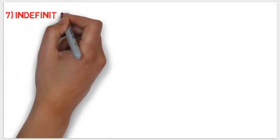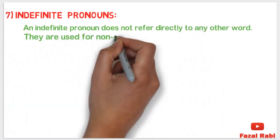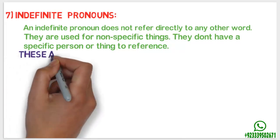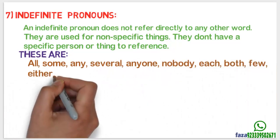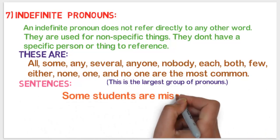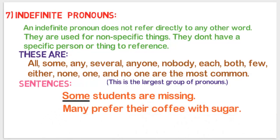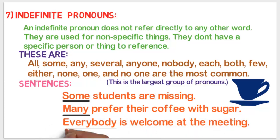Number seven: indefinite pronouns. An indefinite pronoun does not refer directly to any other word. They are used for non-specific things and do not have a specific person or thing to reference. The most common are: all, some, any, several, anyone, nobody, each, both, few, either, none, one, and no one. This is the largest group of pronouns. For example: 'Some students are missing' — some is an indefinite pronoun. 'Many prefer their coffee with sugar' — many is an indefinite pronoun. 'Everybody is welcome at the meeting' — everybody is an indefinite pronoun.